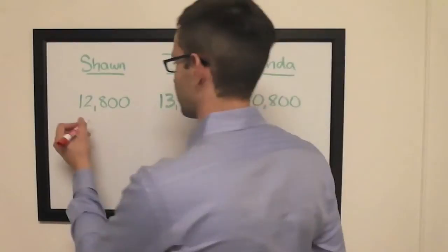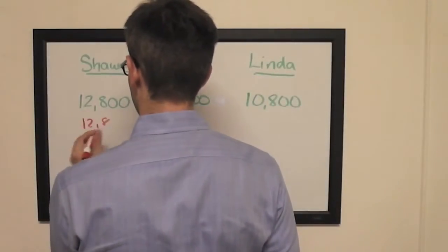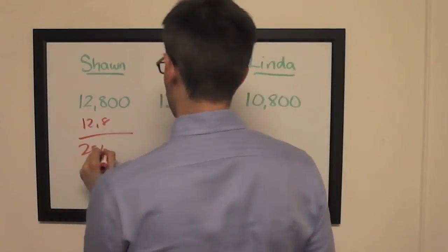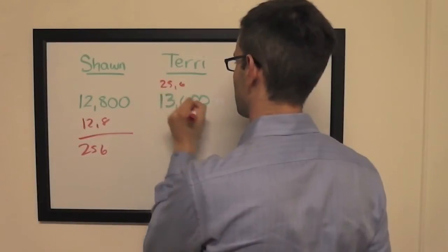To start with first and second, if Shawn doubles up, he's going to have $25,600. So to cover that, Terry will need to wager $12,000.